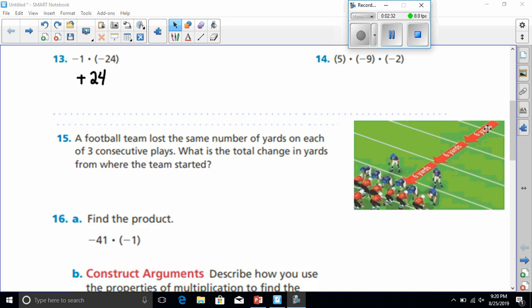As you see, the picture states we have 6 yards, 6 yards, and 6 yards. So that means they lost the same number of yards. That was 6 yards each time, three consecutive plays. So that means we have, let's see, they said since we lost it, it's negative 6.